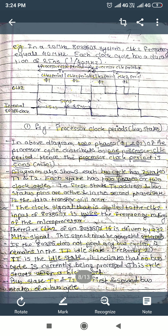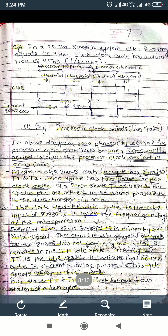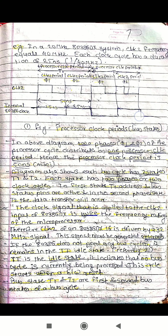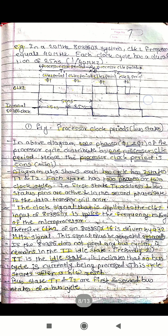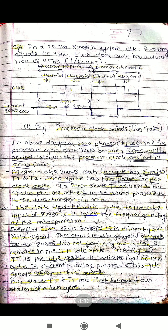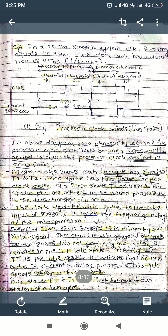Each bus cycle has two states: T1 and T2. The bus status pins are active while each state has two clock cycles. In the first state T1, the address and bus status pins are active. In the second state T2, the actual data transfer occurs.